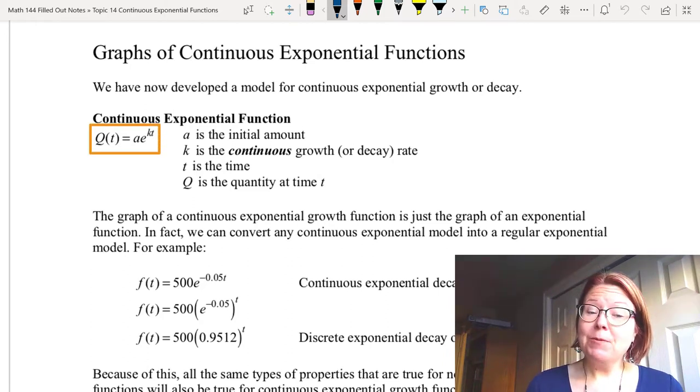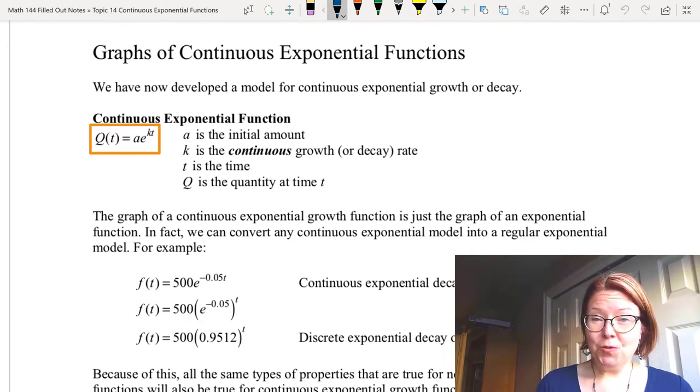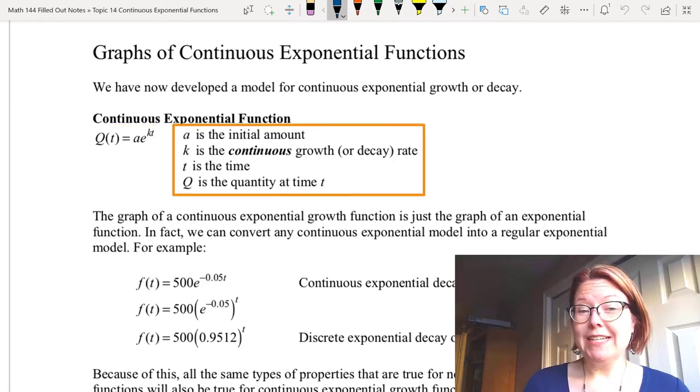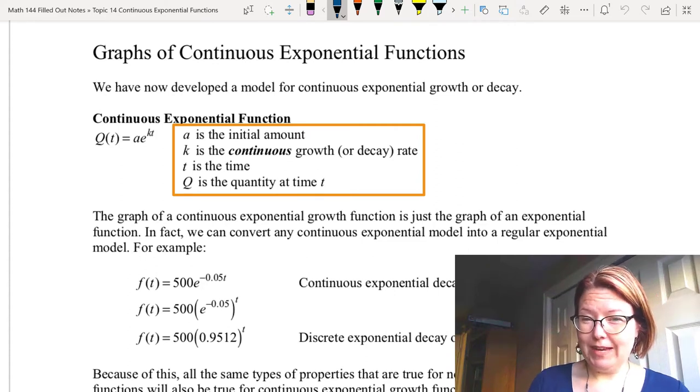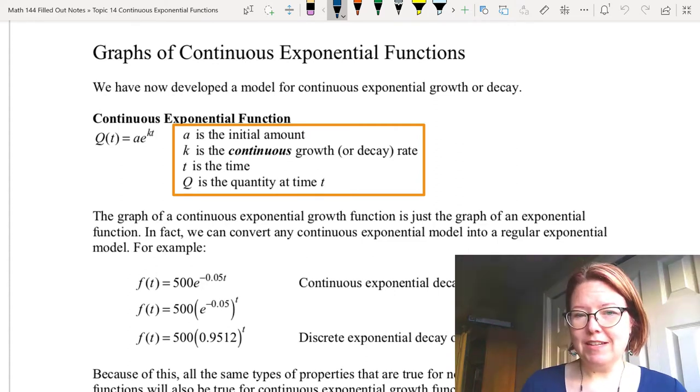It's given by Q(t) equals a times e to the power kt. Lowercase a is the initial amount, lowercase k is the continuous growth or decay rate, lowercase t is the time and capital Q is the quantity at time t.